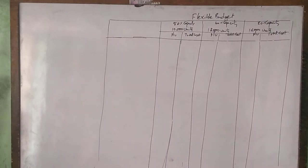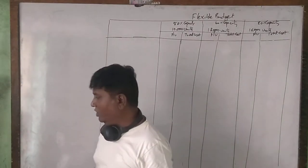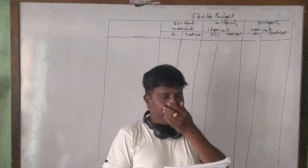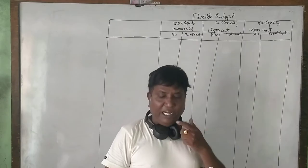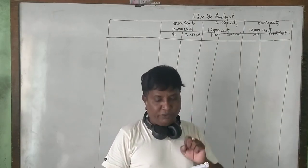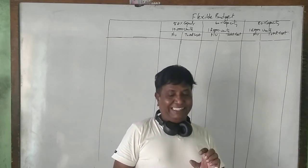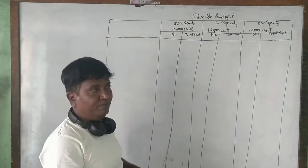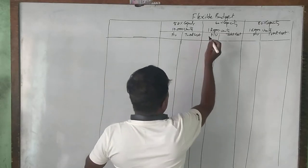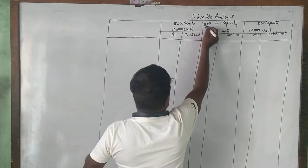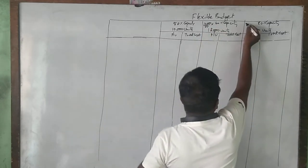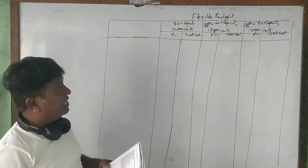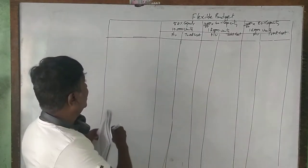In the 2017 14-mark question: from the following information, prepare a flexible budget and estimate profit at 60% and 80% capacity. At 50% capacity, production is 10,000 units. So at 60% capacity it becomes 12,000 units, and at 80% capacity it becomes 16,000 units.